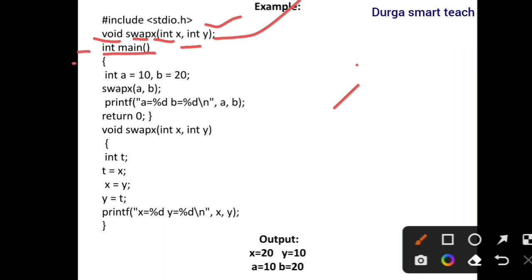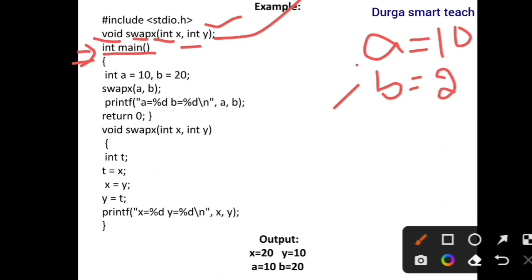Next is the main function — program execution starts from main. int a is equal to 10, int b is equal to 20. Then swapx(a, b) — this is the function call. We are calling swapx and passing parameters a and b, so here we are passing values of variables.